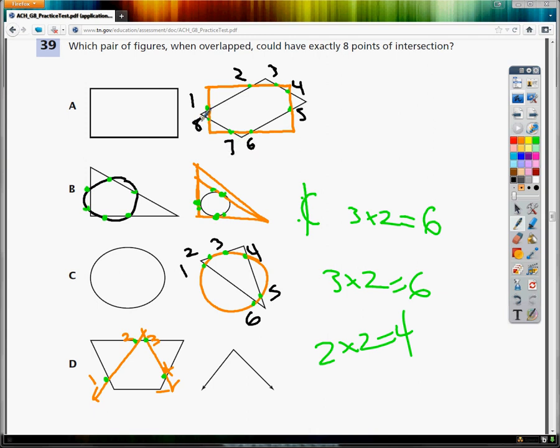And as before, the least amount of sides we had would be 4, and then times 2 gives me 8. So if you look at the smaller figure, or the one with the least amount of sides multiplied by 2, that'll usually give you the total number of intersection points. You can also draw it over top. But the answer to number 39 is A.